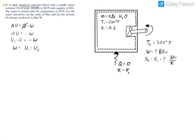To find U1, we have T1 = 260°F and x1 = 0.6. From these, we can find the specific internal energy. The bulk internal energy equals mass times the specific internal energy, so these two forms are equivalent.